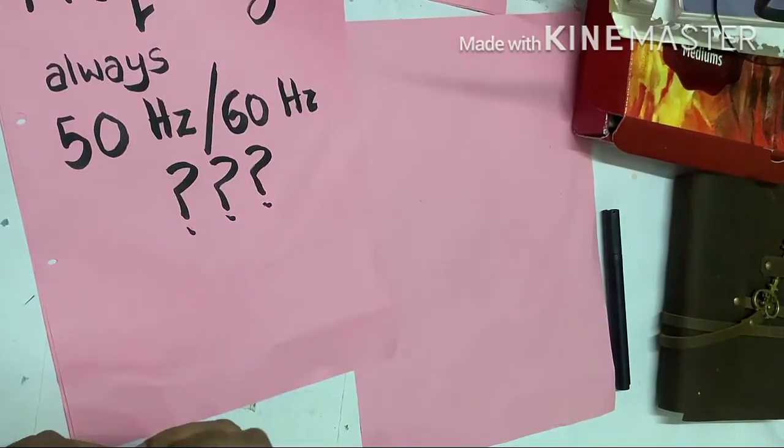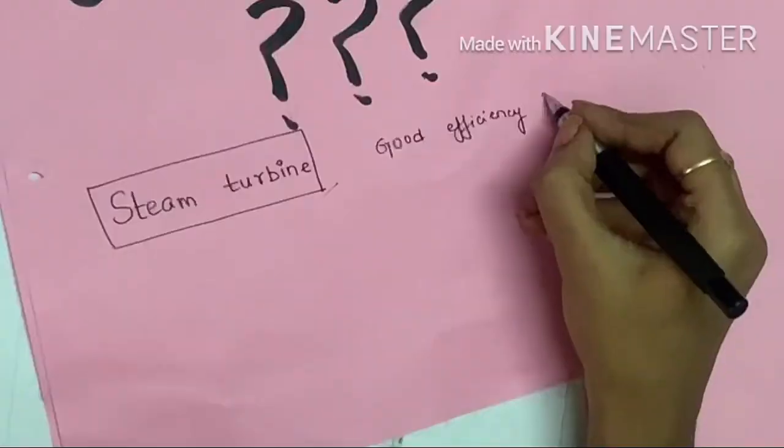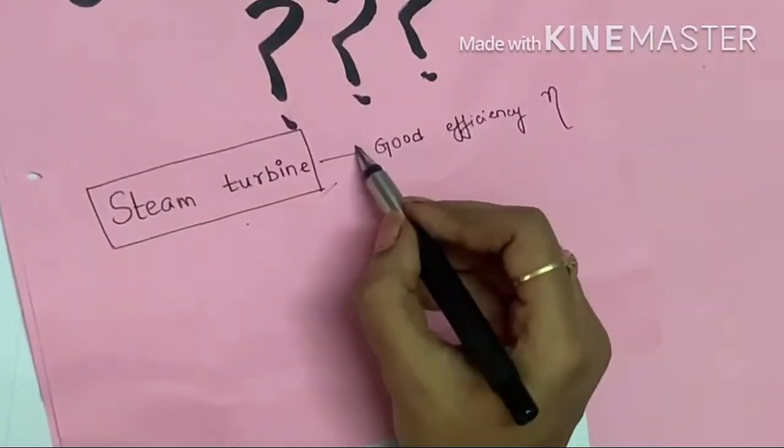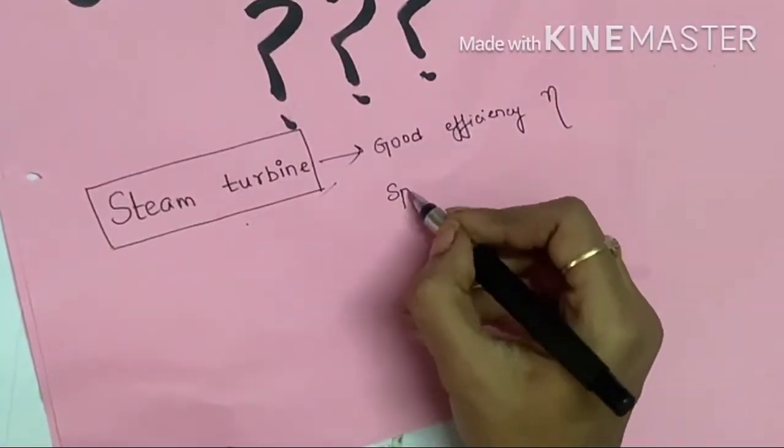Generally, most of the generation in most of the power plants is driven by steam turbines. This steam turbine has a good efficiency at speeds of 3000 to 3600 rpm.